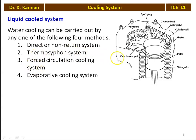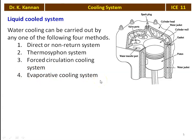Water cooling can be carried out by any one of four methods: the direct or non-return system, the thermosiphon system, the forced circulation cooling system, and the evaporative cooling system. The thermosiphon system works by natural circulation through density difference. The forced circulation cooling system is very popular in all four-wheelers — light duty or heavy duty ground vehicles. The evaporative cooling system is one technique used in liquid cooling.